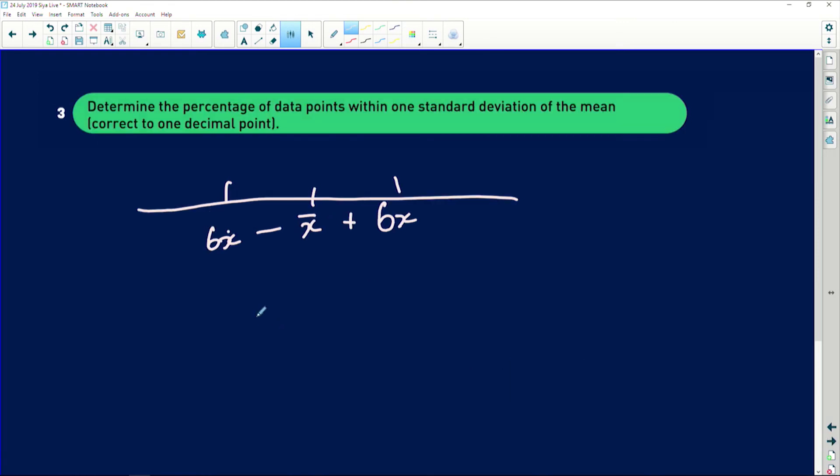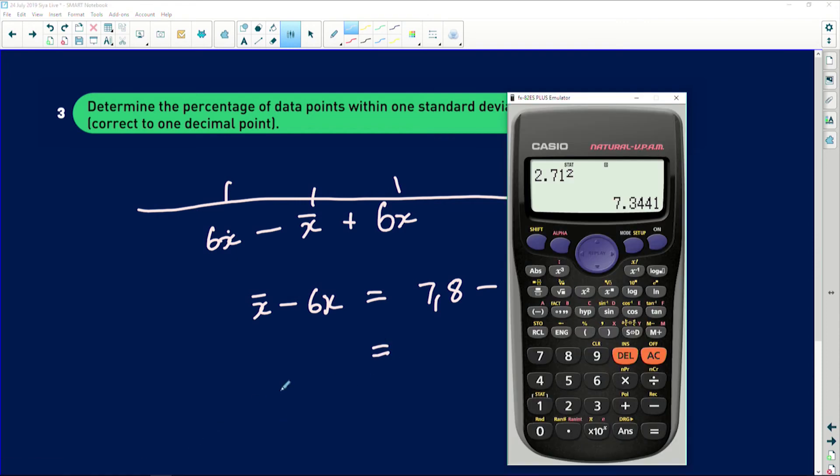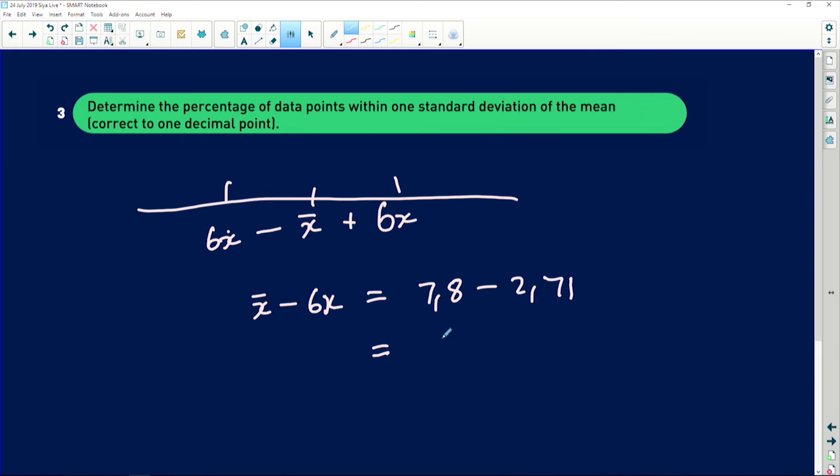It will be x̄ minus the standard deviation. So this is then going to be equal to 7.8 minus 2.71, which is then equal to 5.09. That's the minimum value.